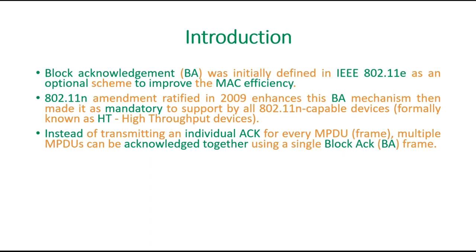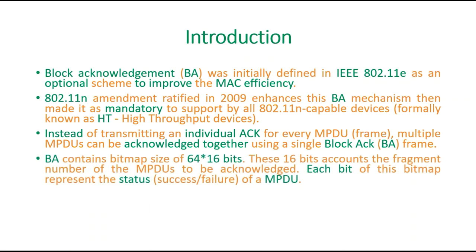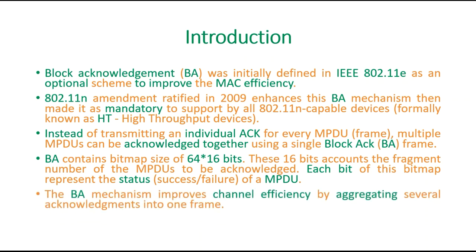This Block ACK contains a bitmap of size 64 by 16 bits. These 64 bits account for the fragment number of the MPDUs. Each bit of this bitmap represents the status — success or failure — of each MPDU. This block ACK mechanism improves channel efficiency by aggregating several acknowledgements into a single frame.